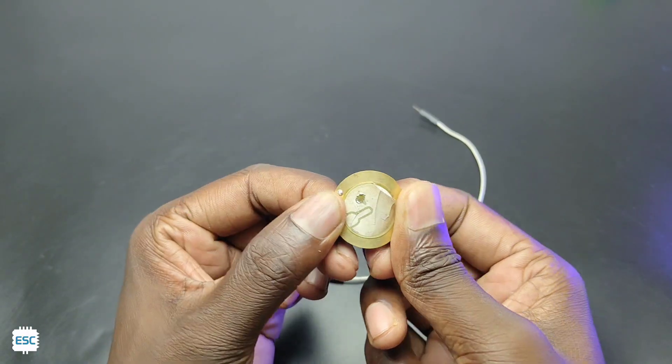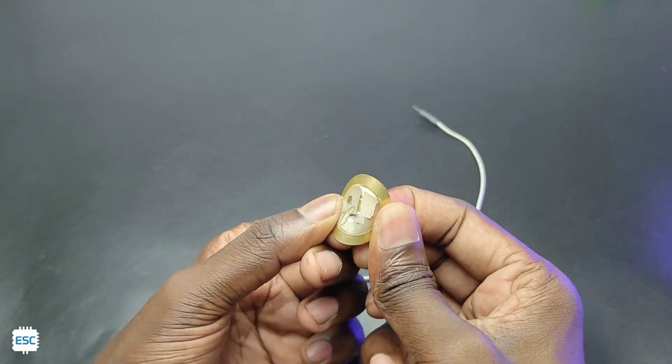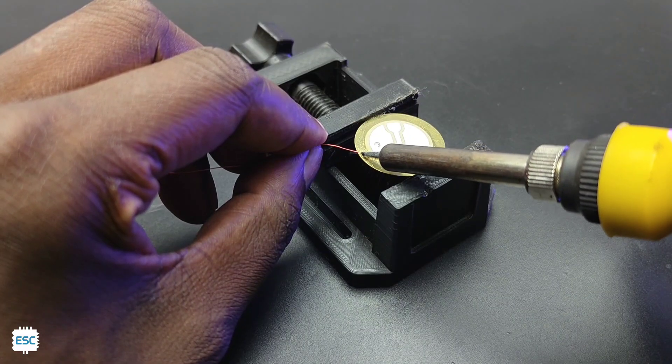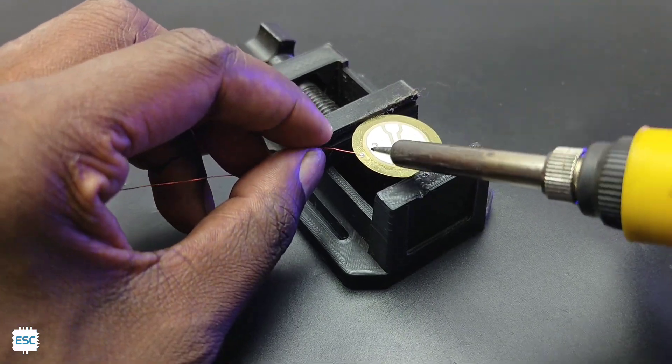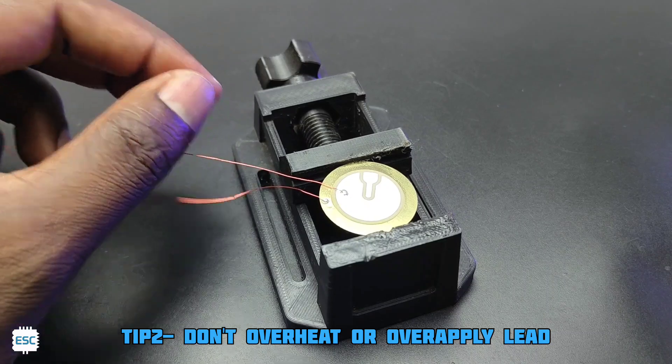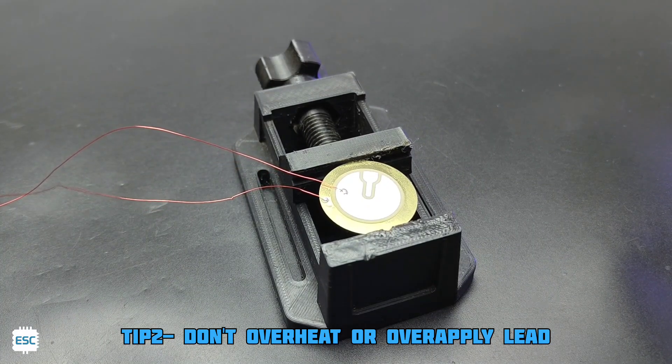Also, these piezoelectric discs are highly brittle. To avoid this, we can use enameled copper wire. The output current is very little, so we can use without any extra thoughts. Tip number two: don't overheat the disc or over apply the lead on the plate. Do soldering fast.